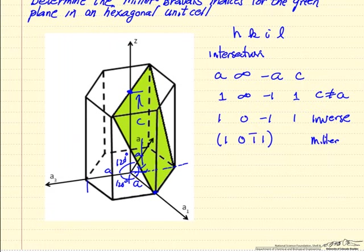Now I mentioned that there's redundancy, which means that H plus K is equal to minus I. So we can always just determine I, and you can see in this case 1 plus 0 equals minus I is minus 1. So we can always determine the third indices from the other two.